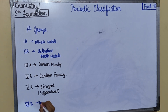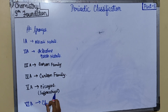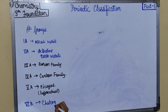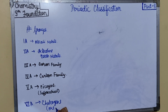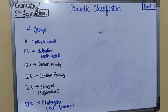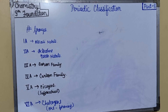Sixth A group is chalcogens, which means ore-forming. Chalcos in Greek means ore-forming. Oxygen and sulfur are two important elements of this group, and these elements are associated with ores of many metals in the form of their oxides and sulfides.